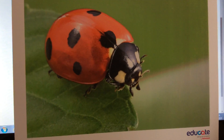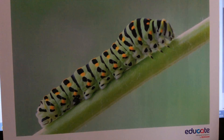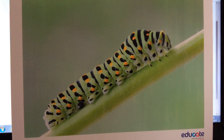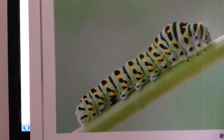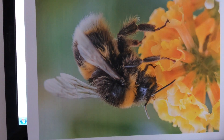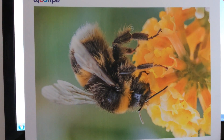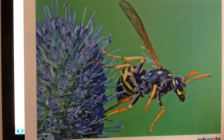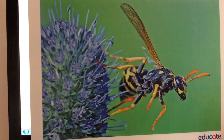Look, what insect is this? It's a caterpillar. Repeat with me: a caterpillar. Very good! What insect is this? It's a bee. Repeat with me: bee. Very good!